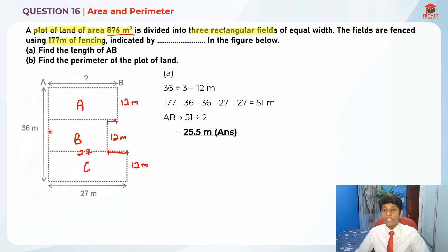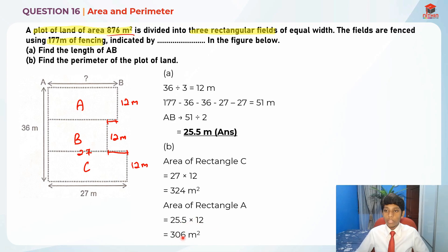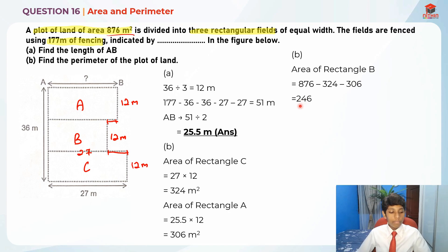Let's find the areas of A and C first. Area of rectangle C = 27 × 12 = 324 square meters. Area of rectangle A = 25.5 × 12 = 306 square meters. Now, area of rectangle B = 876 − 324 − 306 = 246 square meters.